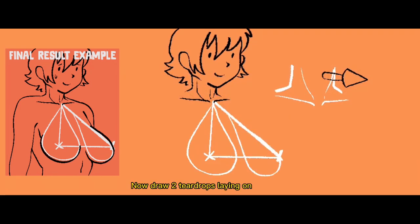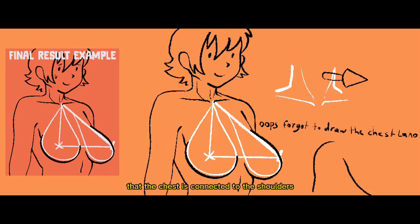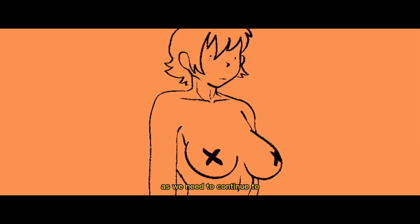Now draw two teardrops laying on the chest centered around the nipples. Now outline the teardrops from the bottom and the sides. A friendly reminder that the chest is connected to the shoulders which goes over the armpit area. And now you know how to draw them, but not so fast as we need to continue to the next tips on how to actually draw them much better.